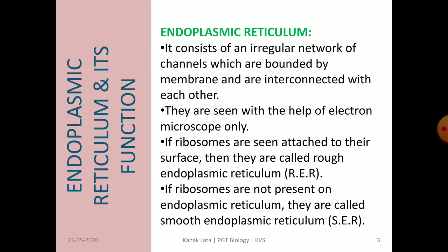Endoplasmic reticulum is an irregular network of channels which are bounded by membranes and are interconnected with each other. It is only visible under an electron microscope. It is of two types: smooth endoplasmic reticulum and rough endoplasmic reticulum. If ribosomes are seen attached to the surface of endoplasmic reticulum, it is called RER — rough endoplasmic reticulum. If ribosomes are not present on the surface, it is called SER — smooth endoplasmic reticulum.